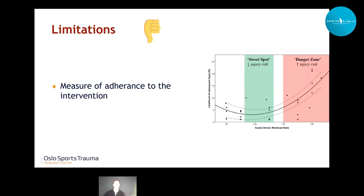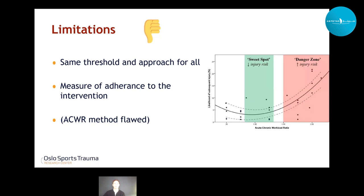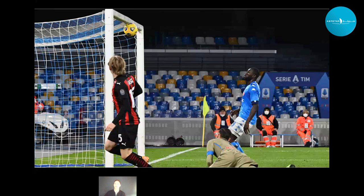The limitations of the study: one was the measure of adherence to the intervention — we wished we had a more sound measure quantifiable from every week. We also used the same threshold and approach for all athletes, whereas in real life it seems you need different thresholds for different individuals. And last but not least, if the research question was whether training load and injuries are connected or can be prevented through load management, then in hindsight ACWR should not have been used, as it is a really flawed method. But if the question was whether ACWR itself could prevent injuries, that was obviously the correct approach and may also be a strength of the study.